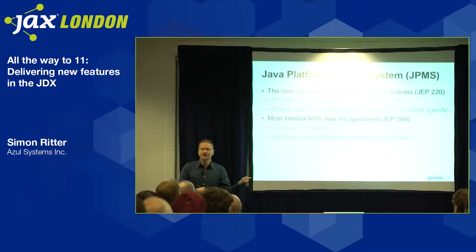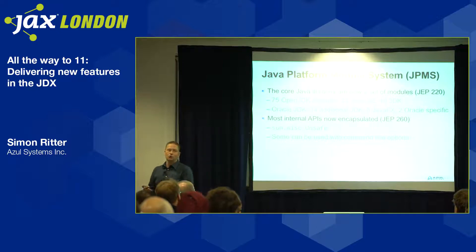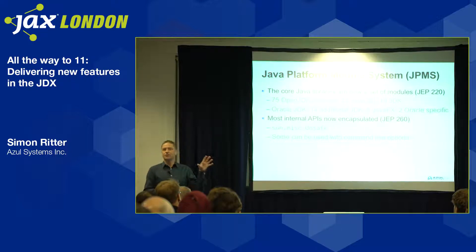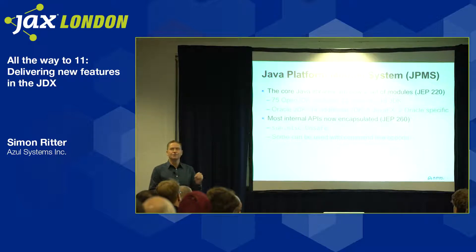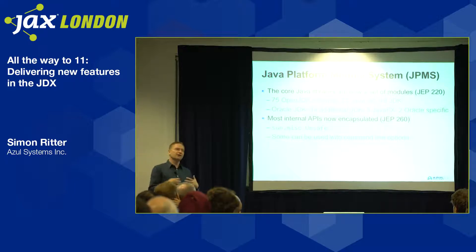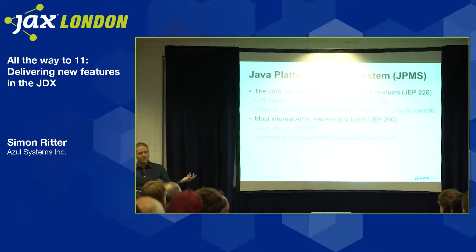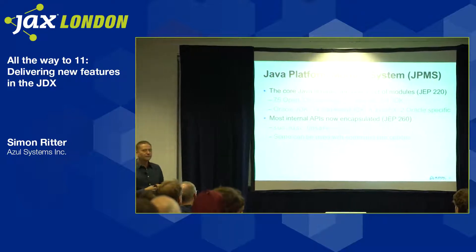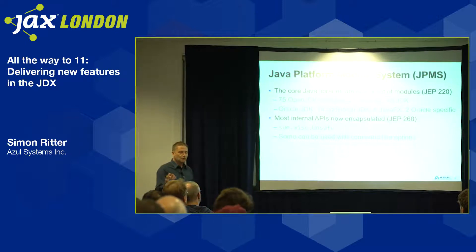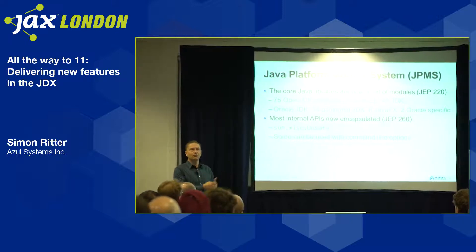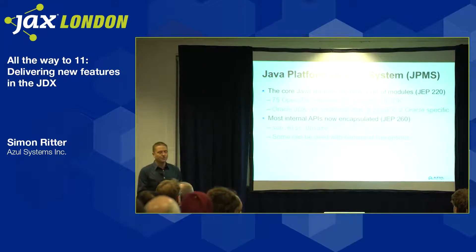In OpenJDK there are 75 modules. Of those, 27 are for Java SE — the standard defined by the JCP for the JSR — which is what you need for something to be called Java. Then there are another 48 specific to the JDK, related to tools and things not part of the Java standard. In the Oracle JDK for JDK 9 there are another 14 modules including things like JavaFX for desktop applications and a couple of Oracle-specific ones.